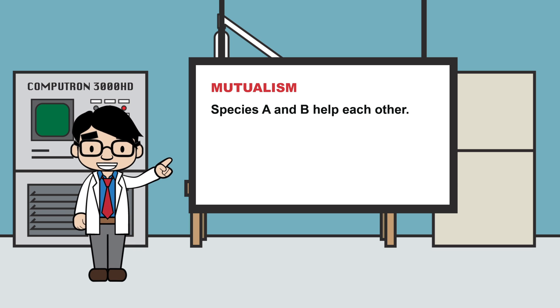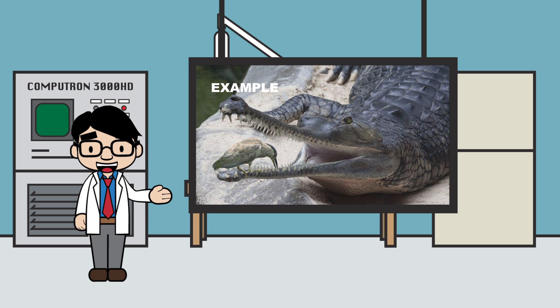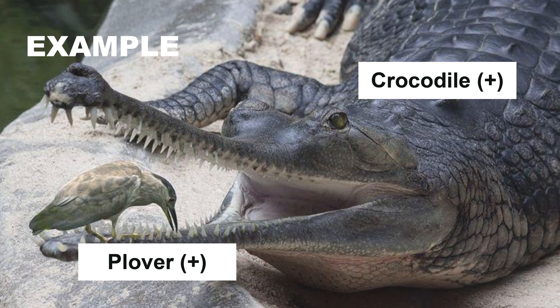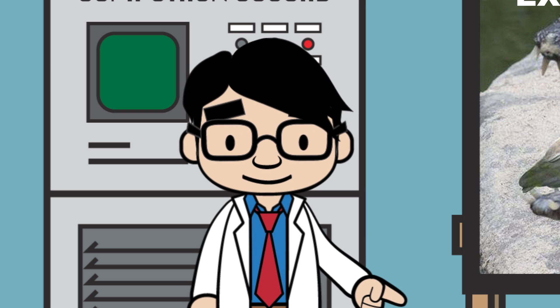Mutualism is probably the most well-known. In mutualism, species A and B help each other — that's a win-win for both species, as they both get a benefit. An example of mutualism is the interaction between the plover and the crocodile. The plover will go into the crocodile's mouth and clean its teeth. The plover benefits by getting a free meal, and the crocodile benefits by maintaining its healthy smile.